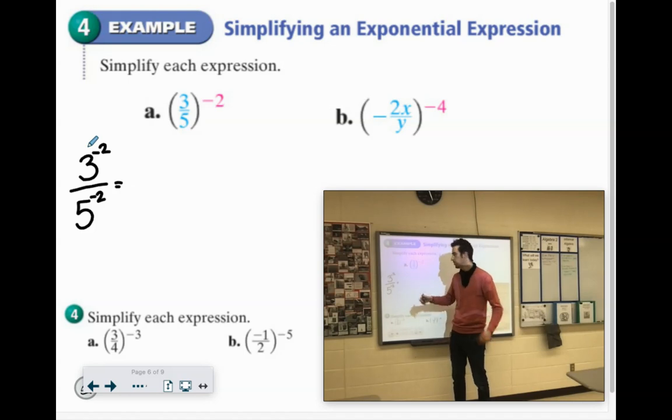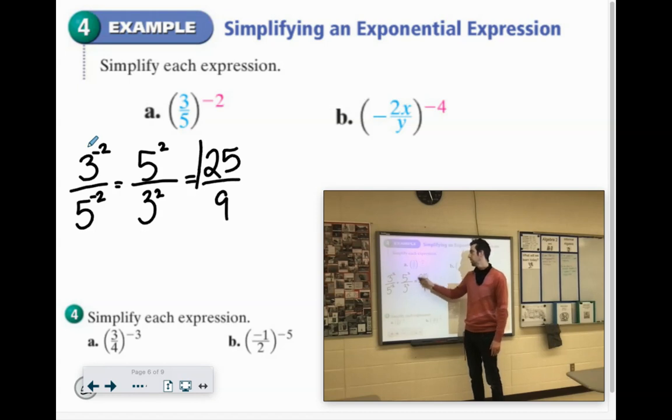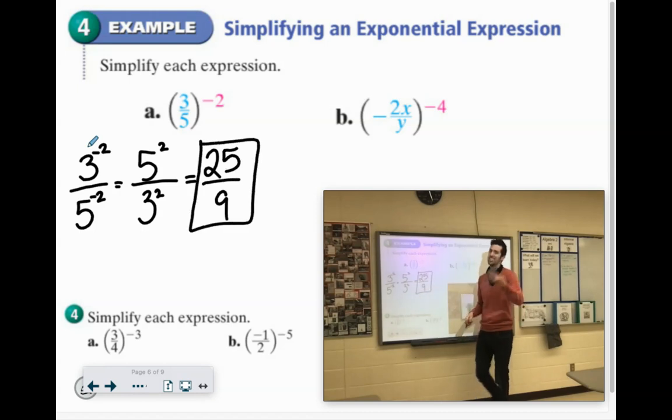And then you're like, oh, well, 3 to the negative second would go to the denominator. 5 to the negative second would go up to the numerator. And then simplify. 5 squared is 25, 3 squared is 9. Great. That works. I got us there. And actually, it was fine. I said I wouldn't recommend it, but it was fine.